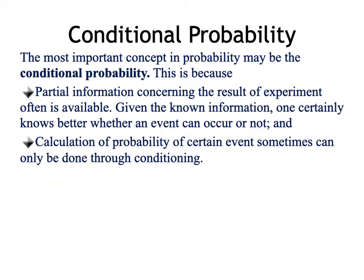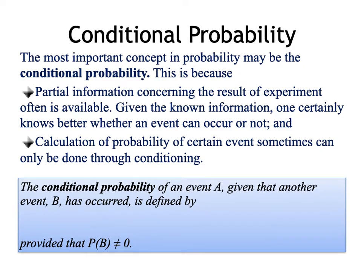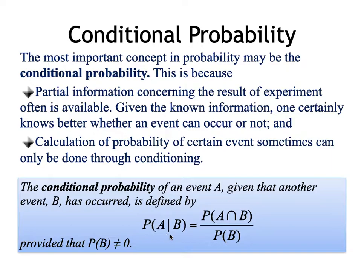The occurrence of an event may be dictated by the occurrence of a previous event. The conditional probability of event A, given that another event B has already occurred, is given by the following formula. This is read as the probability of event A occurring wherein B already happened — the probability of A occurring given that event B already occurred. That is given by the probability of the intersection of the two events divided by the probability of the event that already occurred.